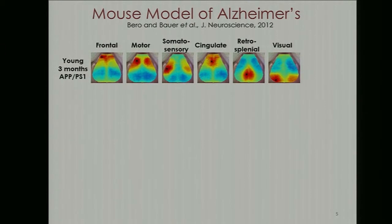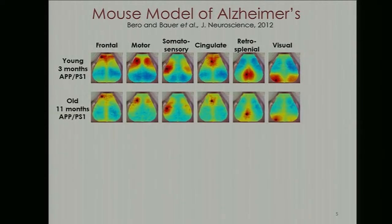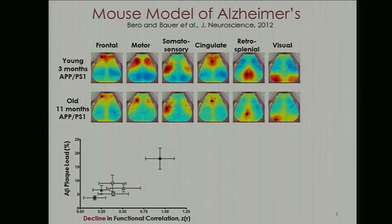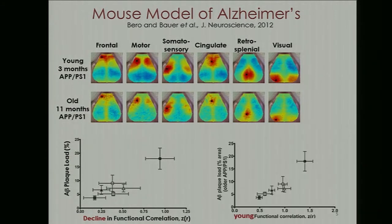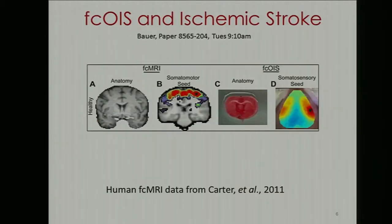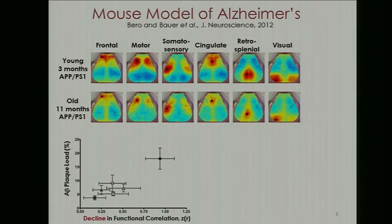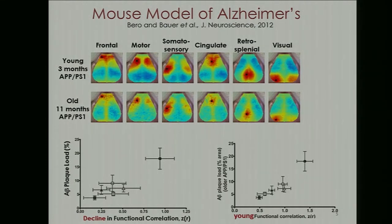With this method, we can begin to study neurological diseases. Here are the functional connectivity patterns for young mice in an Alzheimer's study, and here are the maps for mice at 11 months old. You can see that functional connectivity has declined in a region-specific way. When we correlate the FC decline versus the amyloid beta disease load, there's a strong correlation. Furthermore, the baseline functional connectivity parameters are actually predictive of disease load at 11 months. So functional connectivity has a bidirectional relationship with this Alzheimer's model.